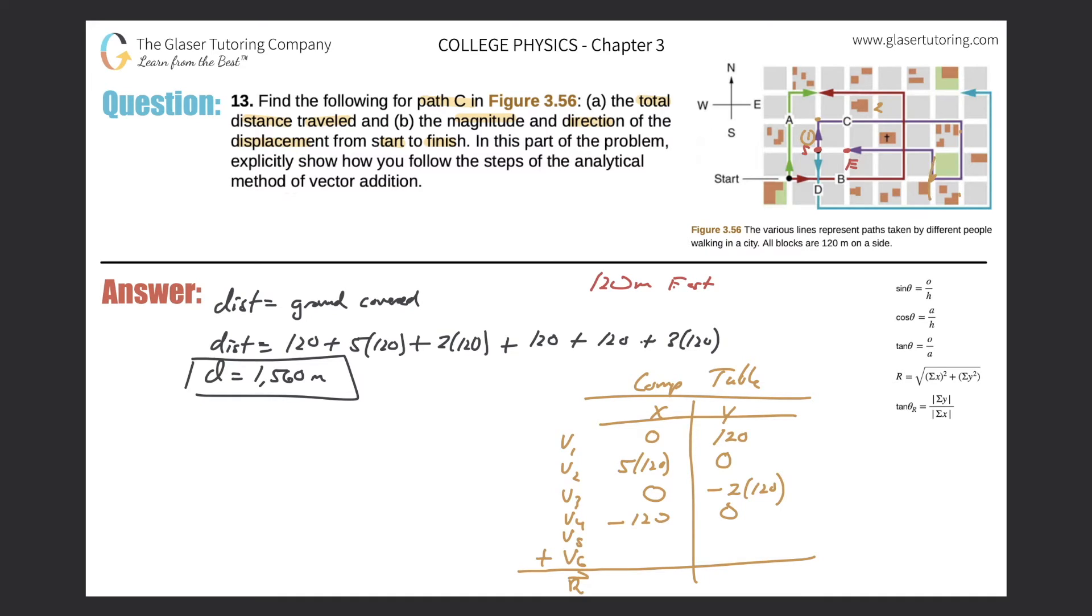So now in the next one, here would be my vector number five, and it is purely a vector in the y direction and it's positive, so it would be a positive 120 for y and zero for x.